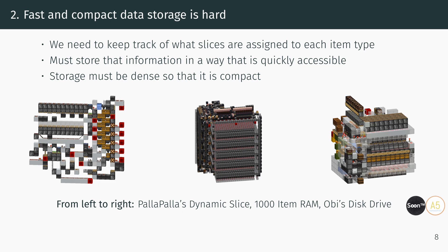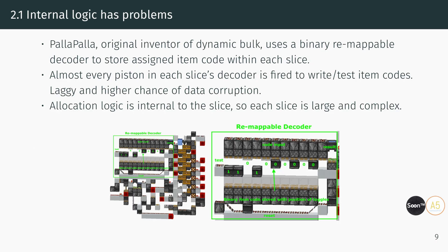To understand the challenges of developing dynamic bulk systems, we need to look at their history. In the beginning, there was Palapala's design, but his implementation of a self-organizing bulk storage system fell victim to issues with stability and scalability. These problems stemmed from the way data storage was integrated into each slice. Palapala used a remappable binary decoder that relied on toggle states to match incoming requests with assigned slices. This approach required every piston in each slice to be activated for an input bit, causing lag and increasing the risk of data corruption. Additionally, the slices themselves were massive, making it difficult to scale the system.